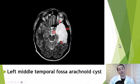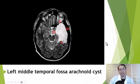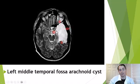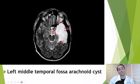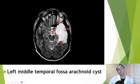Sometimes arachnoid cysts can be massive. Here you can see a very large left middle temporal fossa arachnoid cyst obscuring the entire left temporal lobe. I have a patient with a very similar MRI finding who is completely asymptomatic — it was an incidental finding.